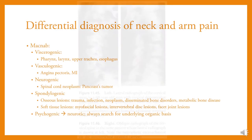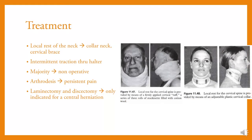Differential diagnosis of neck and arm pain using Macnab's classification: viscerogenic (pharynx, larynx, upper trachea, esophagus), vasculogenic (angina pectoris, MI), neurogenic (spinal cord neoplasm, pancoast tumor), spondylogenic (osseous and soft tissue lesions), and psychogenic (neurotic — always search for underlying organic basis). Treatment includes local rest of the neck, intermittent traction through a halter, and the majority is non-operative. For persistent pain, laminectomy and discectomy are indicated only for central herniation.